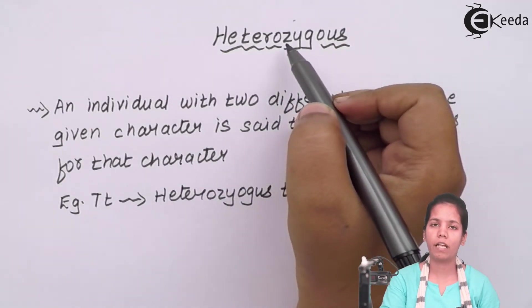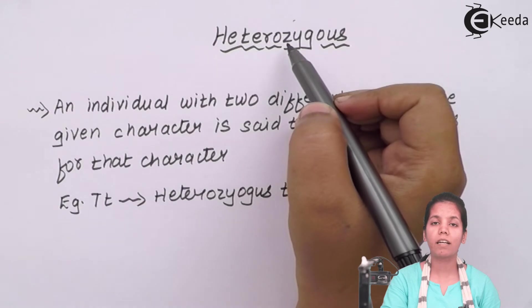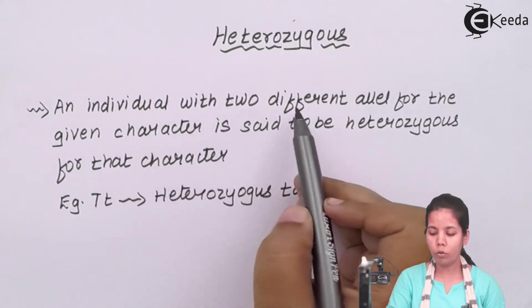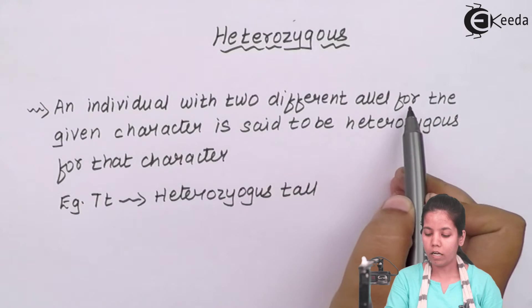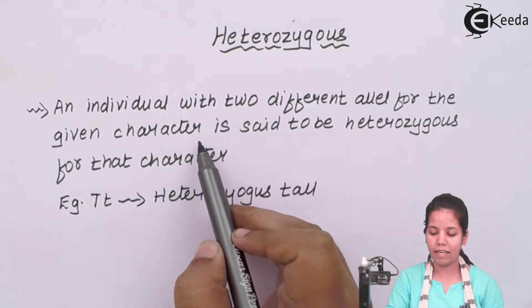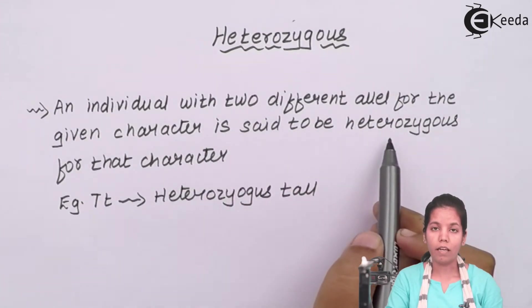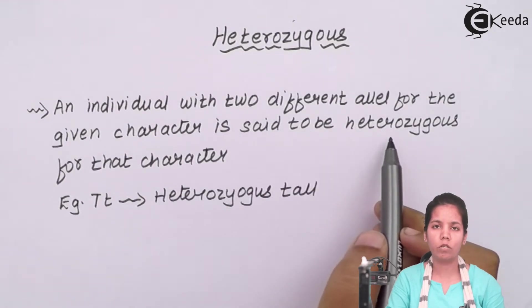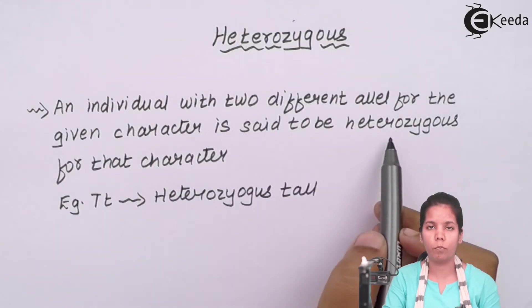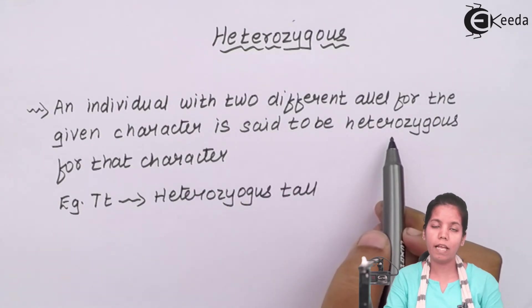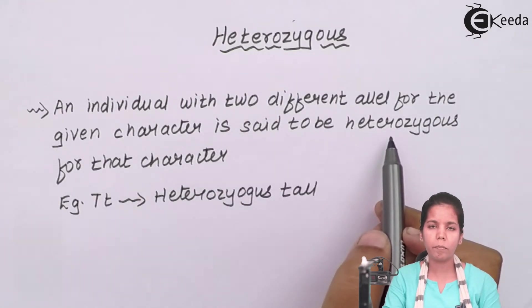When I talk about heterozygous, it means different. An individual with two different alleles for a given characteristic is said to be heterozygous. These two different alleles will be present on the same locus or on different loci on the chromosomes — we could have some on the same locus and some on different loci as well.